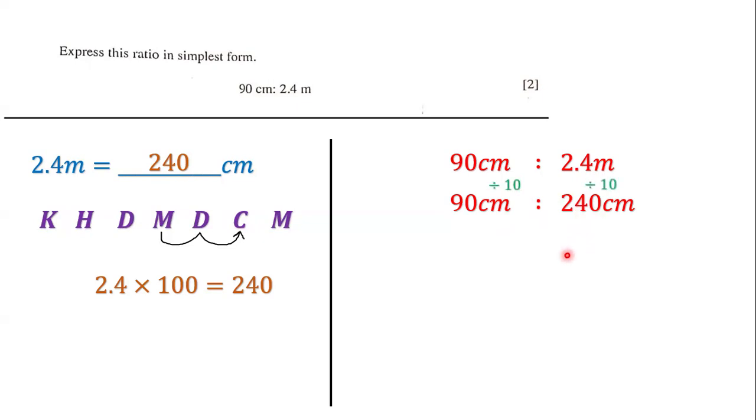So we have 90 divided by 10 and 240 divided by 10. We divide these two: 90 divided by 10 is 9, and 240 divided by 10 is 24. Now we ask ourselves, what number can go into both 9 and 24?